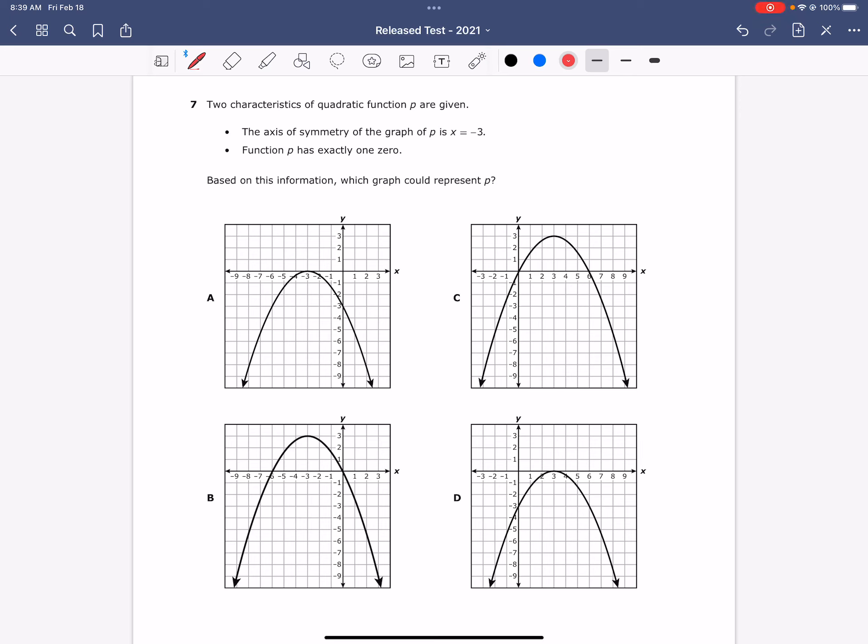Two characteristics of quadratic function p are given. The axis of symmetry of the graph of p is x equals negative 3, and function p has exactly one zero. Based on this information, which graph could represent p?